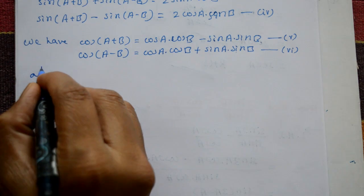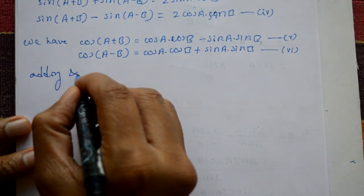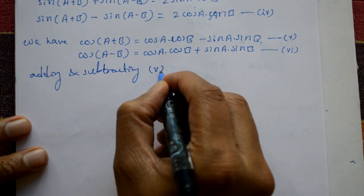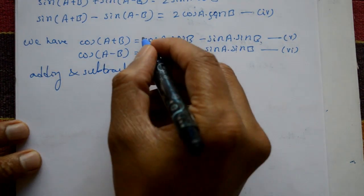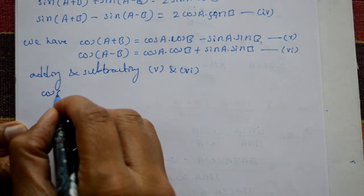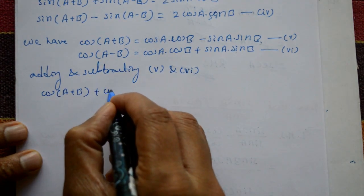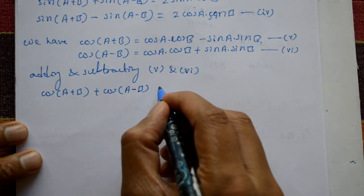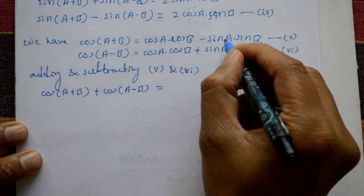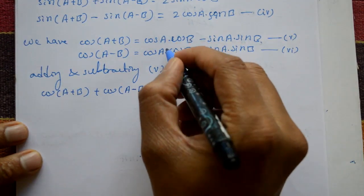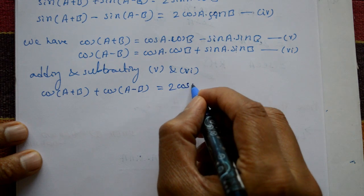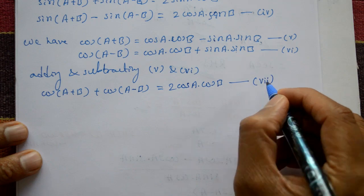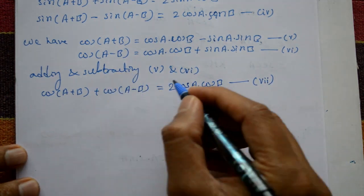Now adding equations five and six: cos(a + b) + cos(a − b). On the right-hand side, the negative and positive terms cancel, leaving two times cos a · cos b. This is equation number seven.